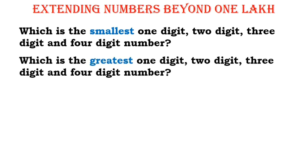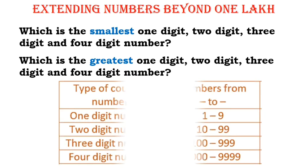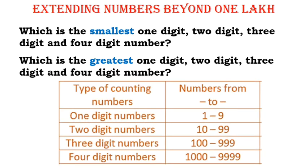And which is the greatest 1 digit, 2 digit, 3 digit and 4 digit number? Look at this table. We know that 1 digit numbers are from 1 to 9, 2 digit numbers are from 10 to 99, 3 digit numbers are from 100 to 999, and 4 digit numbers are from 1000 to 9999.